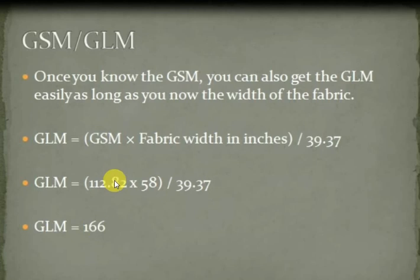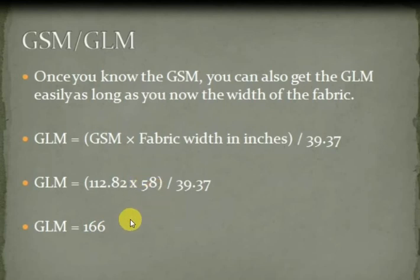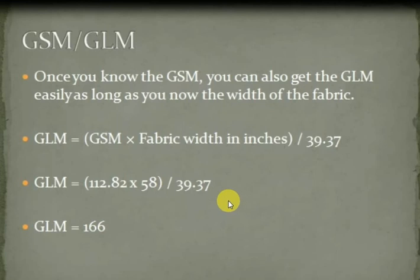When we calculate, the GLM of the fabric comes out to 166. So GSM is 112.82 and GLM is 166 for a 58-inch wide fabric per meter. This is how we can calculate GSM and GLM from construction. Thank you for watching friends, please subscribe to my channel.